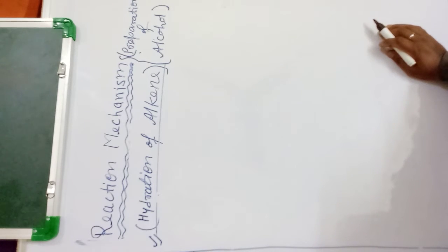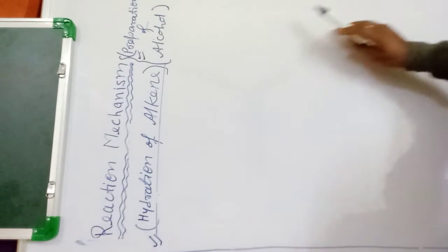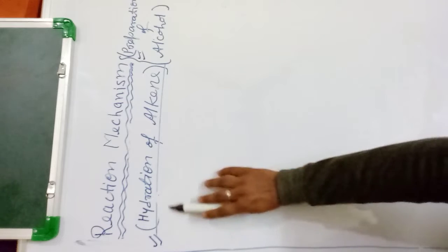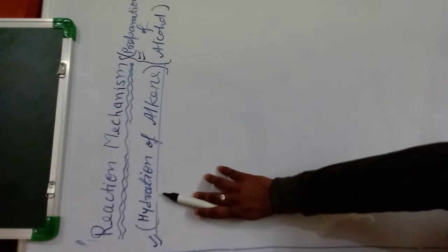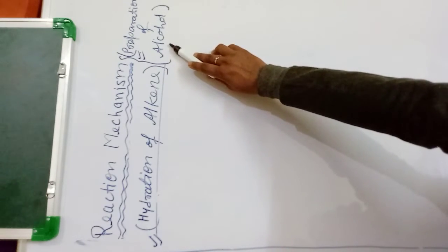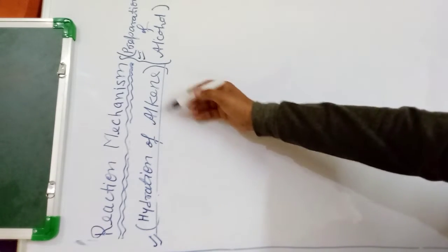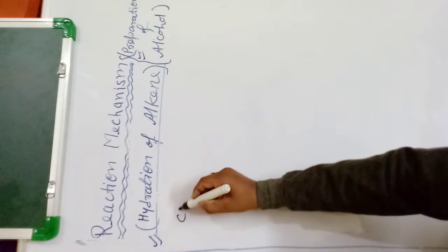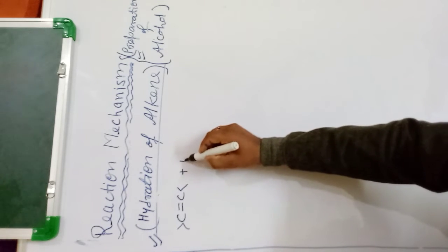Good evening, my dears. Today we will discuss the preparation of alcohol by the hydration of alkene. The word hydration indicates the addition of water — we have to prepare alcohol by the addition of water to the alkene.